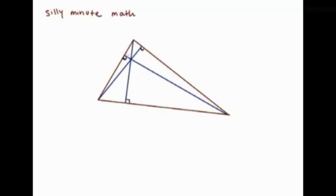These altitudes intersect at a point called the orthocenter.